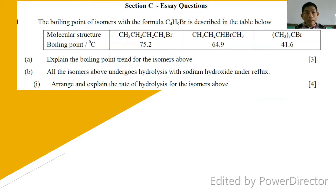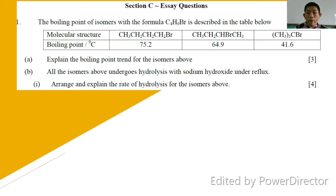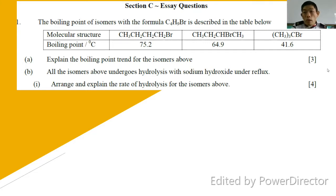These are the questions. Number one: what is the boiling point of isomers with the formula C4H9Br described in the table below? You have 1-bromobutane with boiling point 75.2°C, 2-bromobutane with boiling point 64.9°C, and 2-bromobutane with boiling point 41.6°C. So what makes them so different in terms of boiling point even though they have the same molecular mass?